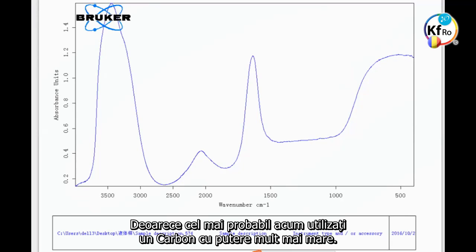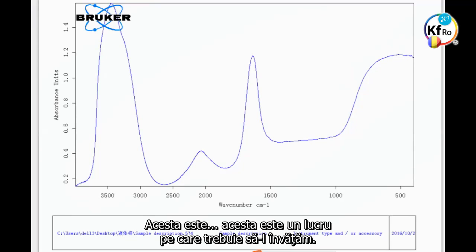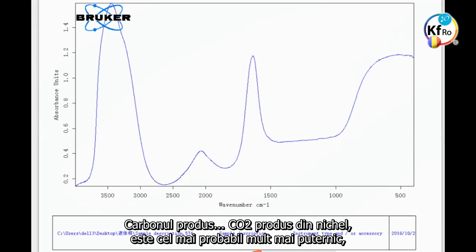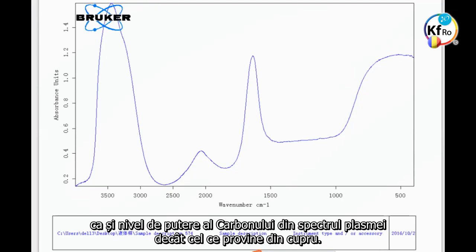Because now you most probably use a higher strength carbon. This is the thing which we have to learn. The carbon produced, the CO2 produced from the nickel, is most probably much stronger carbon level, a strength in the spectrum of the plasma, than the one which is from the copper.